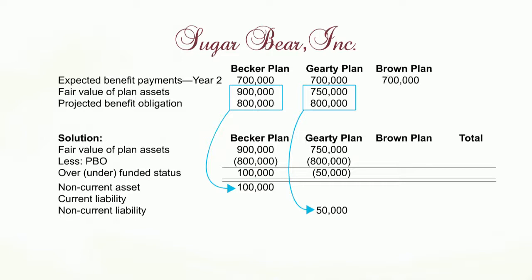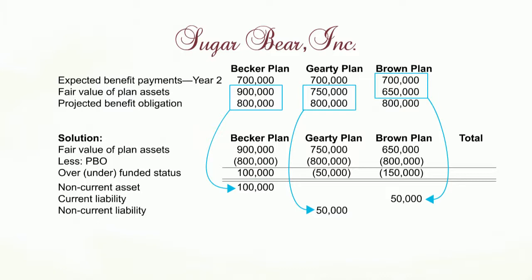Then we have the Brown plan. The Brown plan also has $700,000 coming due next year, and they only have $650,000 in assets to cover it. They're going to be short this year, so they'll have a current liability of $50,000. The $650,000 versus the total obligation of $800,000 means in total we're short by $150,000. $50,000 is an immediate problem this year, and the remaining $100,000 is a problem that will crop up over the subsequent years. So $50,000 goes in the current, and $100,000 goes in the non-current. That's the way the breakouts would occur in this particular problem.